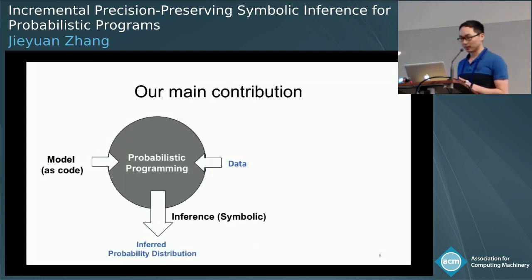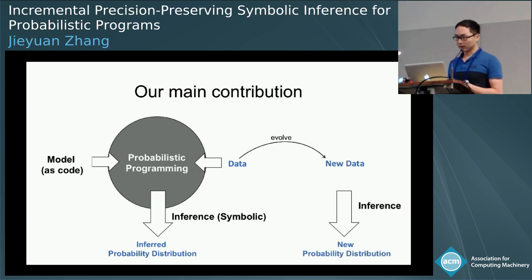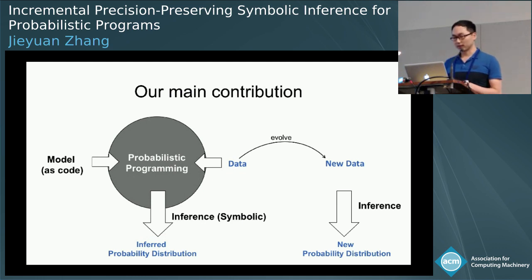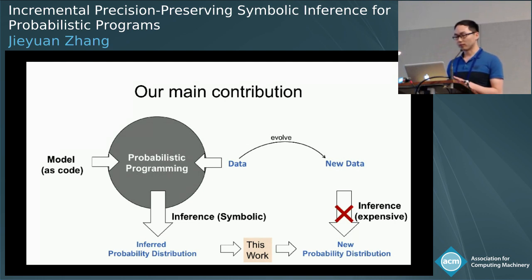What is this paper about? Assume we have inferred a probabilistic program into a probability distribution given a group of data. Now the data evolves to a new group. Intuitively you can conduct inference to compute a new distribution, but it may be expensive. Our work concerns how to incrementally compute a new distribution from the inferred distribution while keeping its precision.